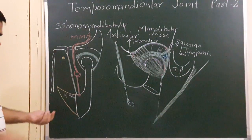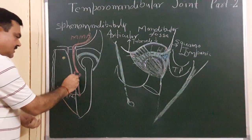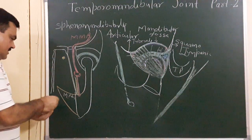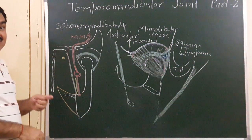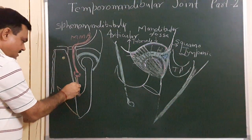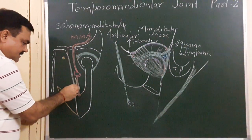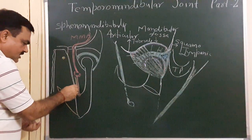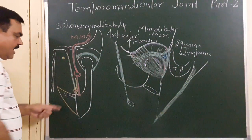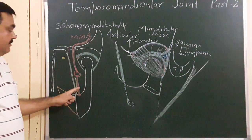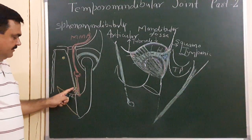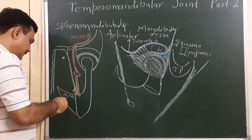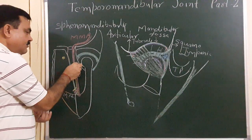The maxillary artery also gives a branch — the inferior alveolar artery. It passes through the foramen accompanied by the inferior alveolar nerve. These two structures give off the mylohyoid branch. The mylohyoid nerve and artery pierce this ligament. Here is the auriculotemporal nerve, which gives supply to this joint.